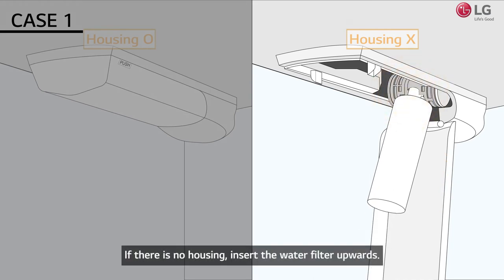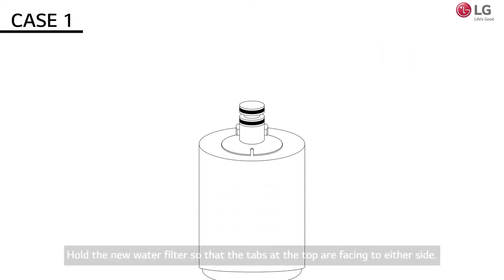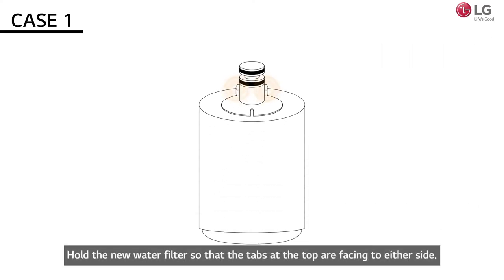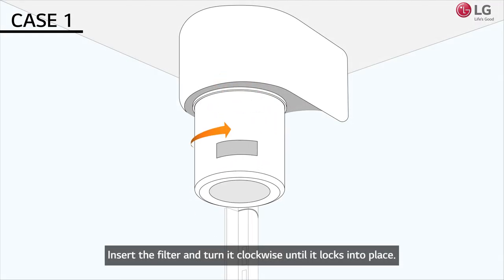If there is no housing, insert the water filter upwards. For models with no filter cover, remove the protective cap. Hold the new water filter so that the tabs at the top are facing to either side. Insert the filter and turn it clockwise until it locks into place.